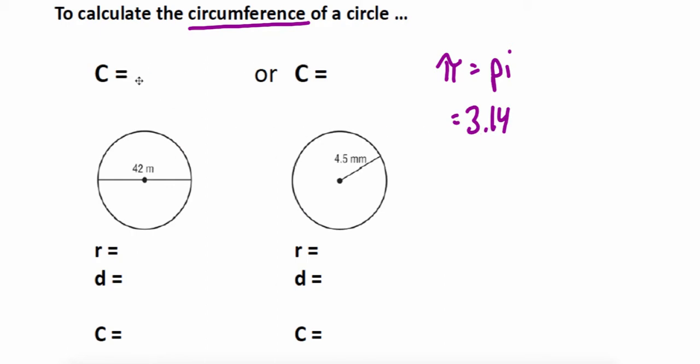You can calculate circumference two different ways depending on what measurement you're given. If you're given the diameter, you just do pi times the diameter. If instead you're given the radius, you do two times radius times pi. Two times radius is the same thing as a diameter.